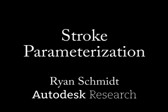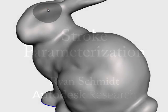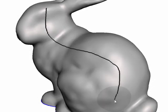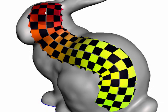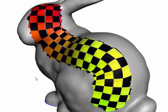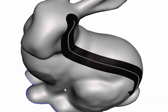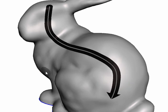Stroke parameterization is a new technique for computing a planar parameterization aligned with a curve on a 3D surface. Stroke parameterizations are useful for applying procedural texture to 3D surfaces. The width of the parameterization can be interactively controlled.